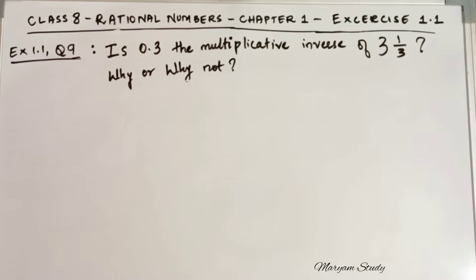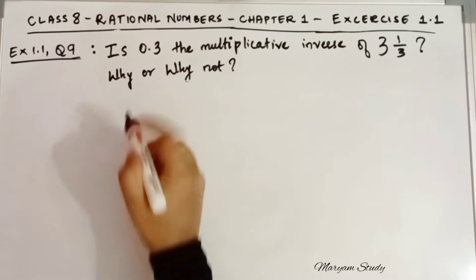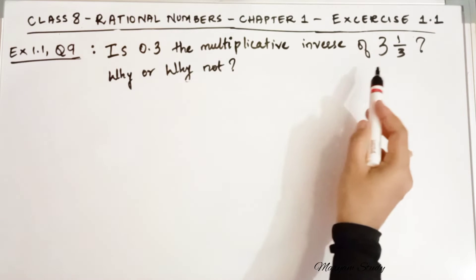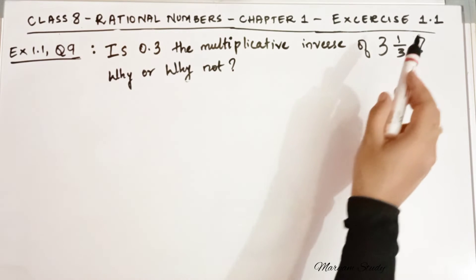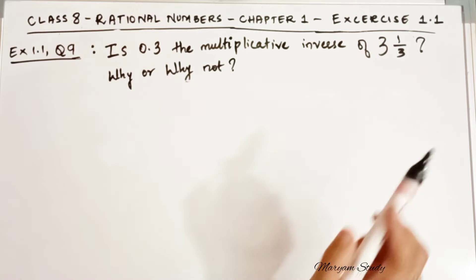Hello students, in this video we are going to solve question number 9 of exercise 1.1 of rational numbers. So what is the question? Is 0.3 the multiplicative inverse of 3 1 by 3? That is the question.